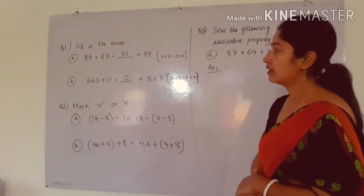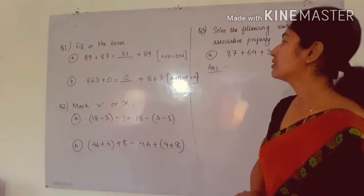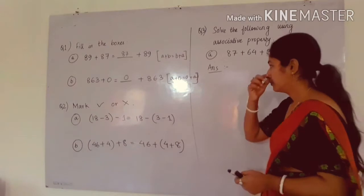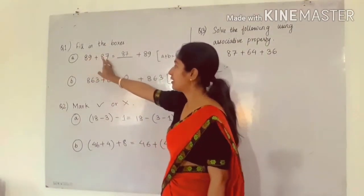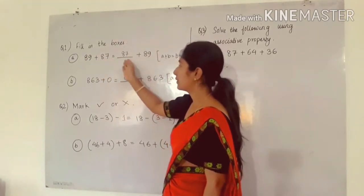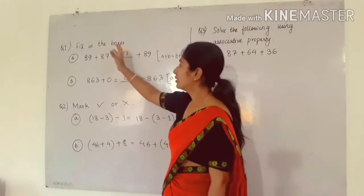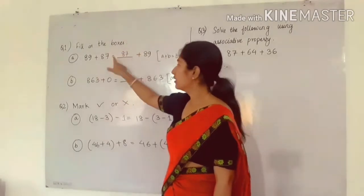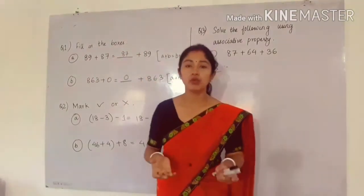Number A is 89 plus 87 is equal to dash plus 89. In the left hand side part we have 89 plus 87, and in the right hand side we have 89. So in the blank space the value will be 87, because left hand side should be equal to right hand side. As equal to sign is present, that means we have to balance both the sides.